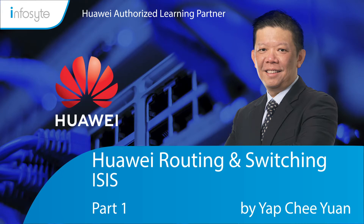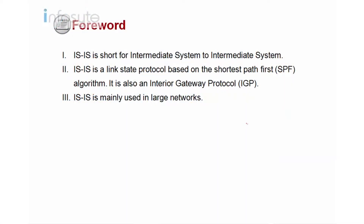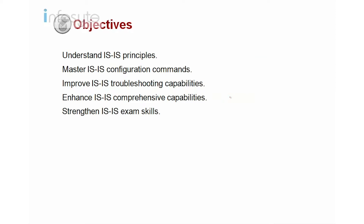The topic I'm going to talk about is ISIS. First we look into what ISIS is, how ISIS works in theory. ISIS is mainly used in large networks, many in the service provider. The objectives of this slide: we look into the principle of ISIS, Huawei commands on how to configure ISIS based on the Huawei VRP, troubleshooting on ISIS, some enhanced features of ISIS, and we look into HCI-E ISIS-SM scale.